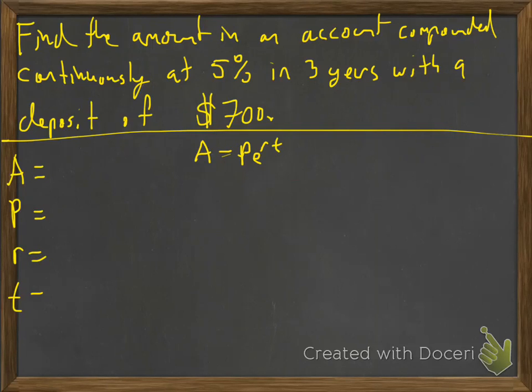Remember your T is time in years and they give you three years. The interest rate is always as a decimal, so 0.05. And the principal is your initial deposit or your starting deposit or what you're loaned, and that's $700. And we don't know what the amount is, so we're just going to plug all that stuff right in. Plug and chug.